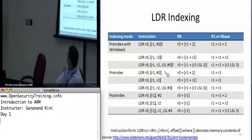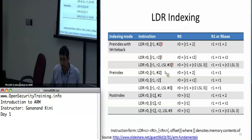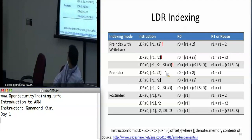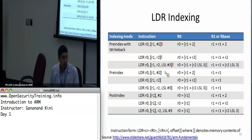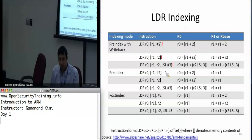You can do a lot of things in one instruction, essentially giving you code size optimization. Pre-index, which we've already seen, is as always: you add the offset but don't write the address back into the base address register. You can also do the shifting here, and it'll use the calculated value but won't write that value back into the base address register.